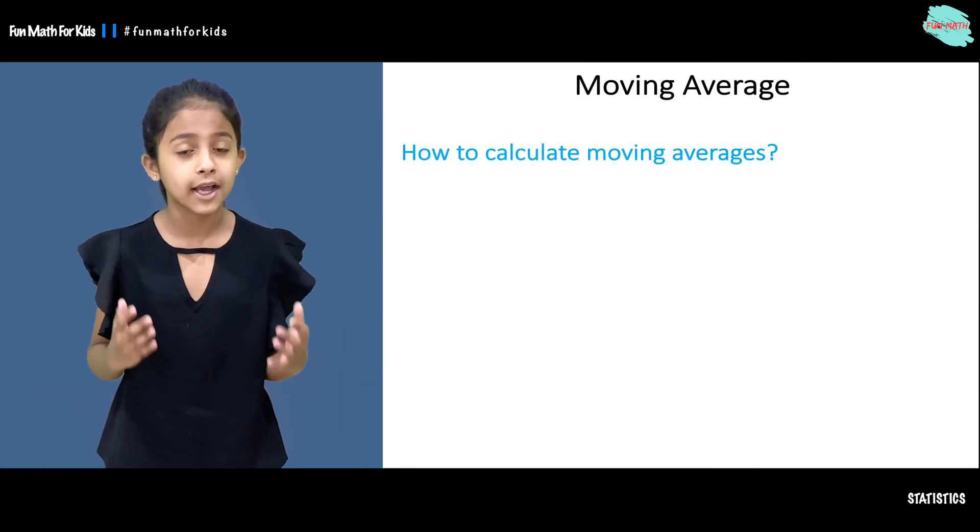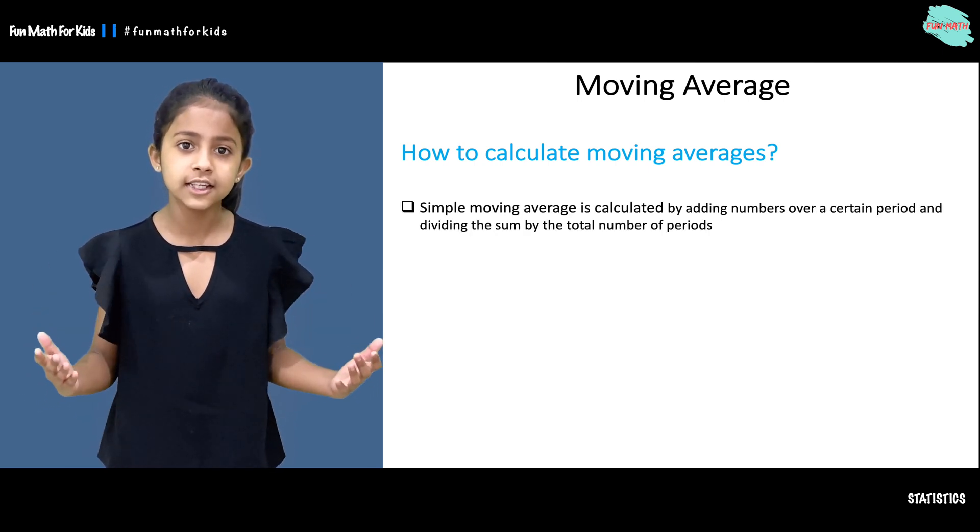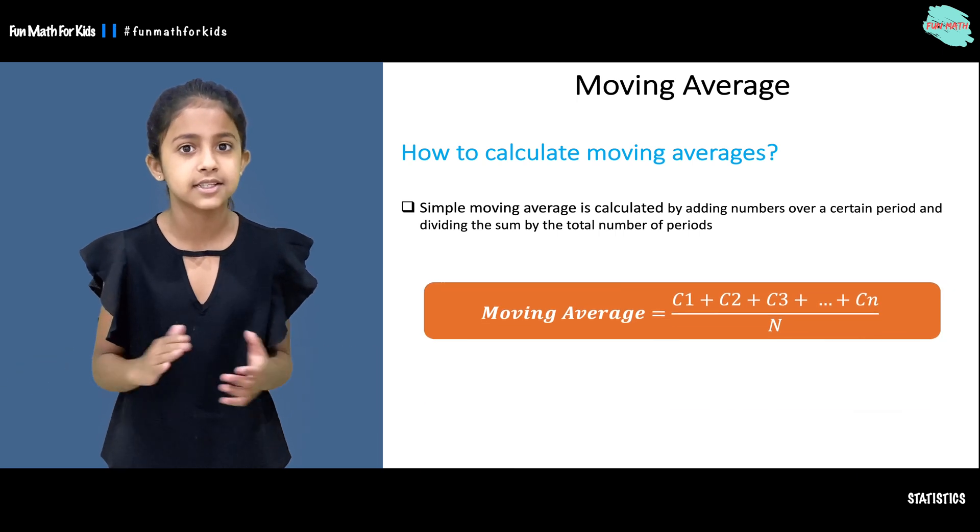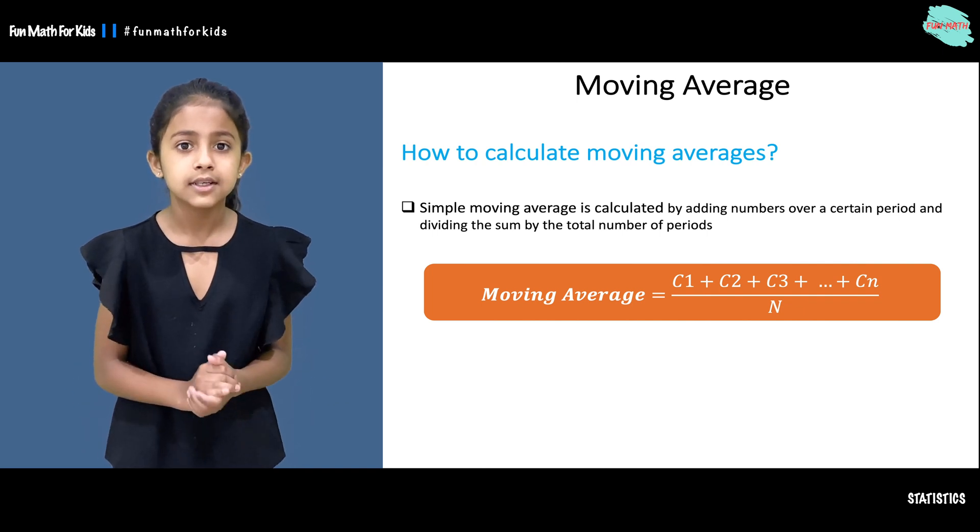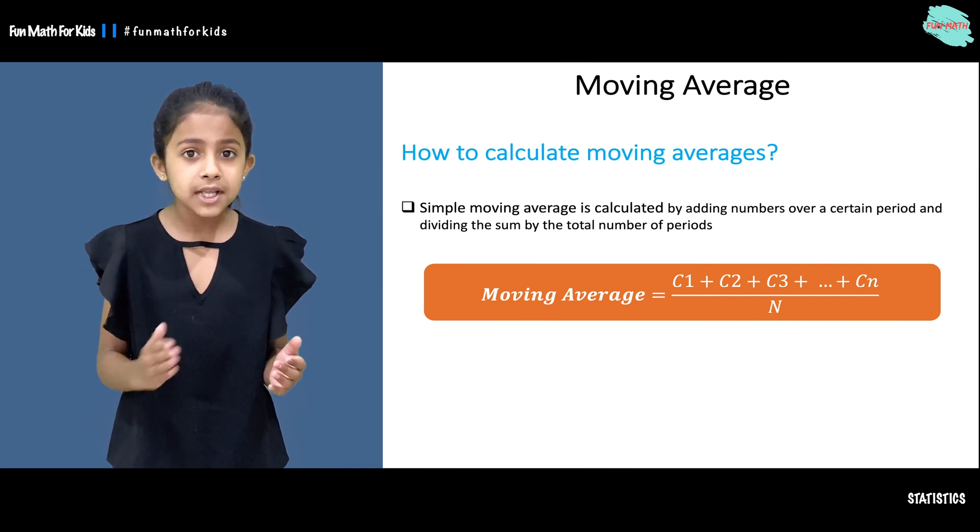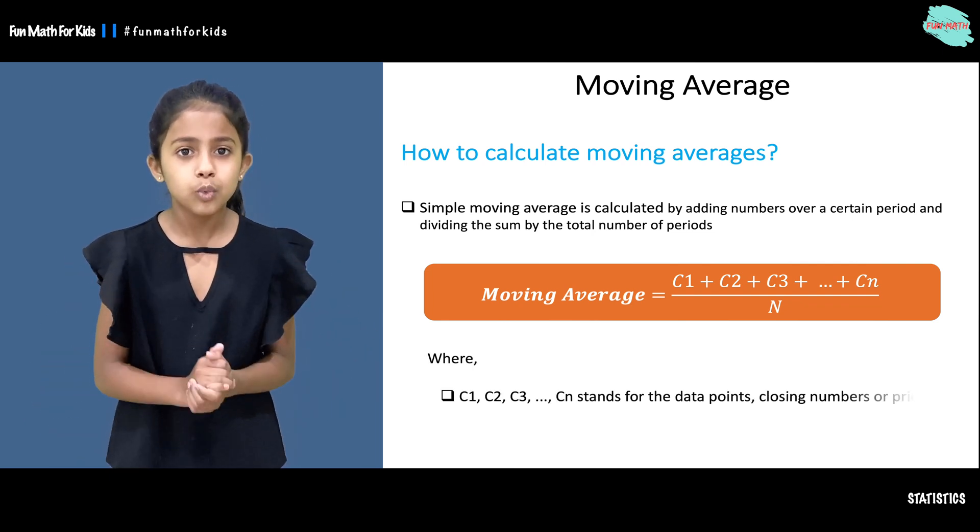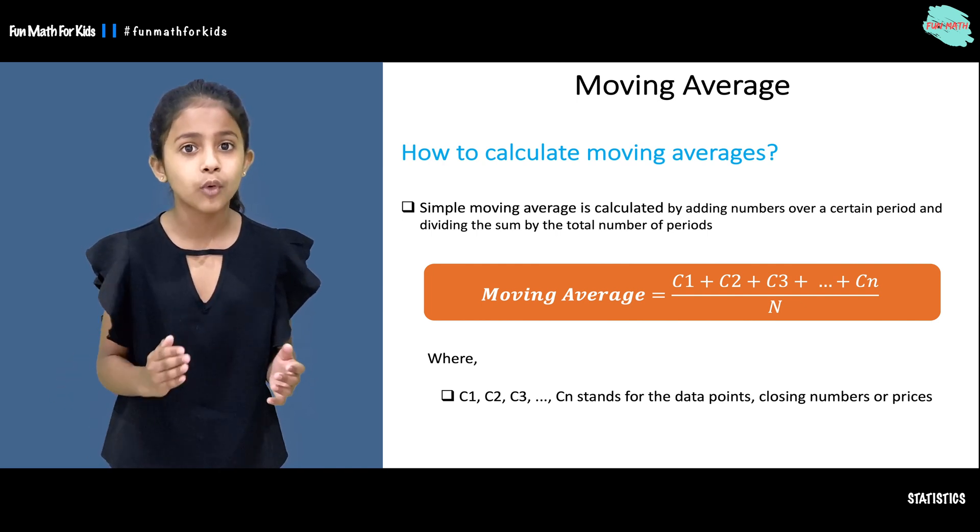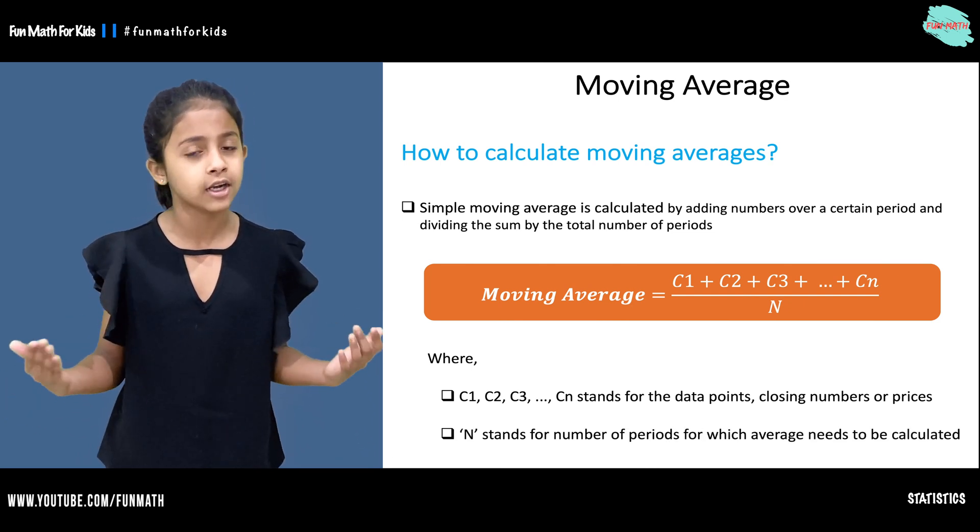Now let's move on and understand how to calculate moving averages. Simple moving average is calculated by adding numbers over a certain period and dividing the sum by the total number of periods. Let's see the moving average formula: c1 plus c2 plus c3 plus so on plus cn over n, where c1, c2, c3, so on cn stands for the data points, and n stands for the number of data points.